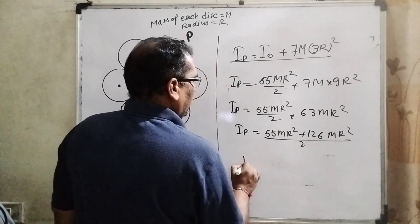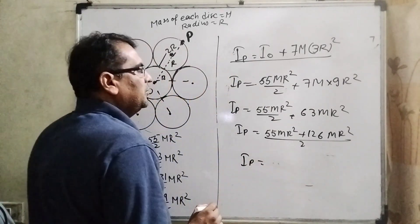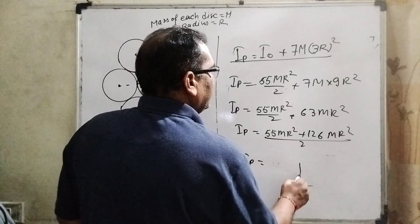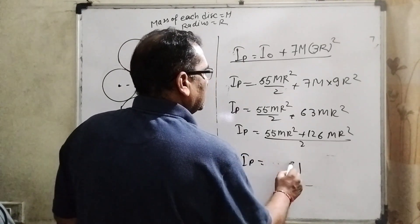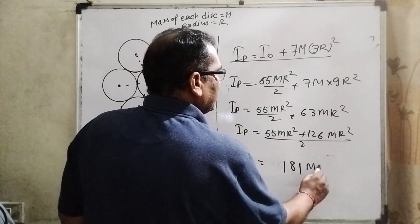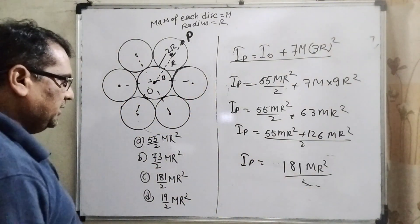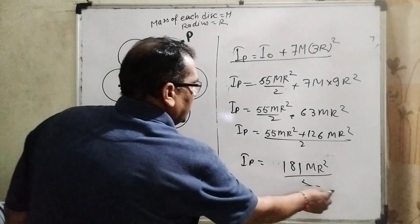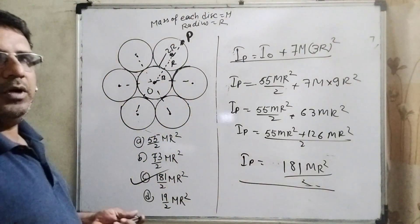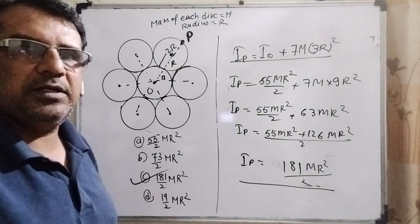MR². Now what is the value of 126 plus 55? 181MR²/2. Let's see which option is correct - you can see Option C is correct. Therefore, it is our answer. I hope you understand.